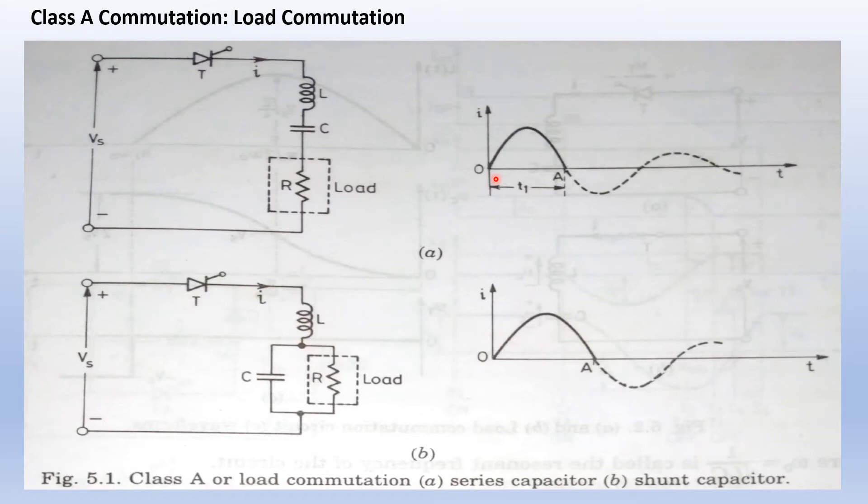It is seen that current first rises to its maximum and then begins to fall up to zero. When current decays to zero and tends to reverse, the thyristor turns off.